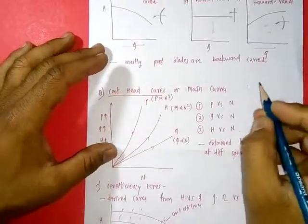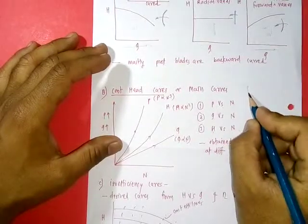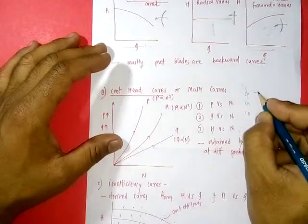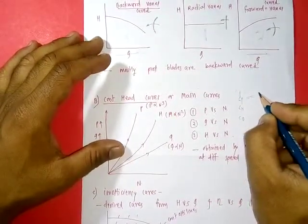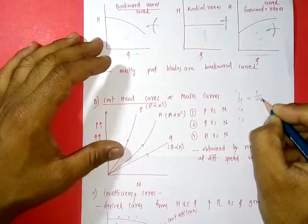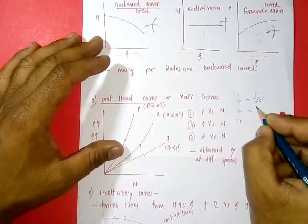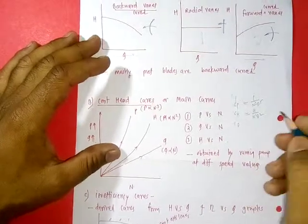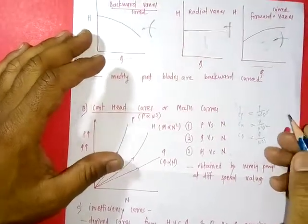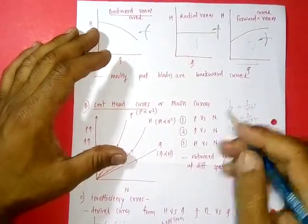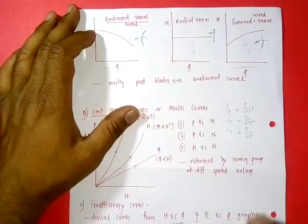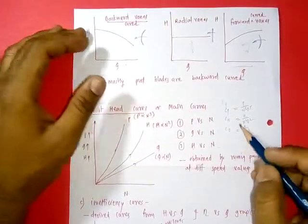For model testing we have the power coefficient, head coefficient, and discharge coefficient. Power coefficient is P/(N³·D⁵) = constant, head coefficient is H/(N²·D²) = constant, and discharge coefficient is Q/(N·D³) = constant. These were seen in the video on model testing of turbines — please refer to that for more details.